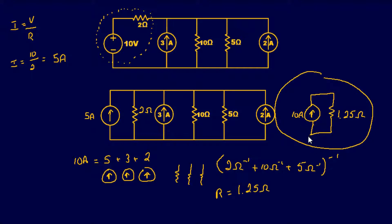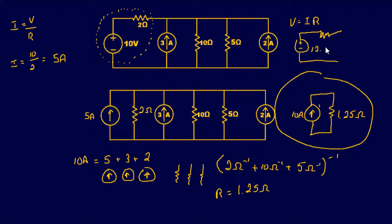To find the Thevenin equivalent from that, same thing we did earlier — V equals I times R, so 10 amps times 1.25 ohms gives us 12.5 volts, with the same resistor of 1.25 ohms. So I was able to find both the Norton and Thevenin equivalents almost instantaneously using source transformation, without doing Thevenin theorem or mesh analysis at all.